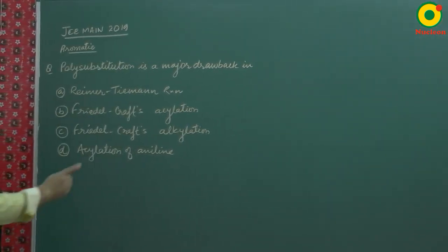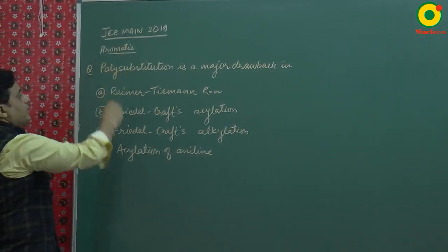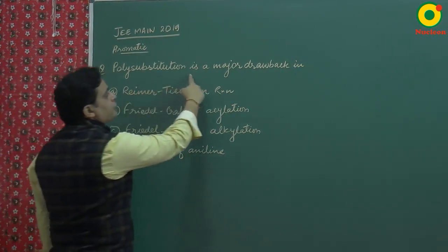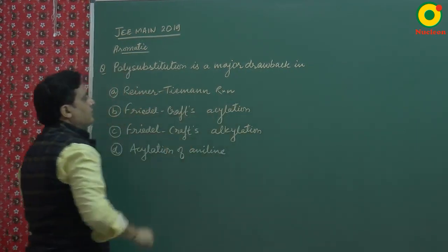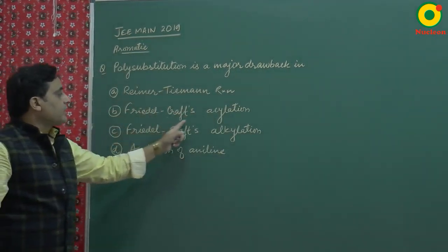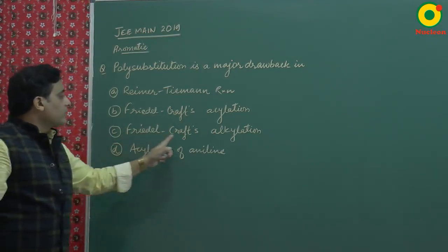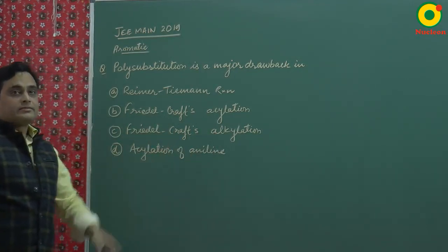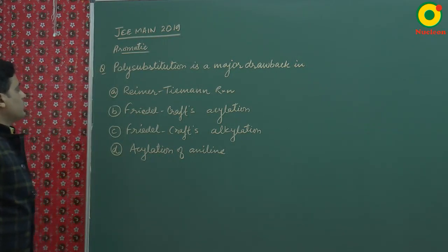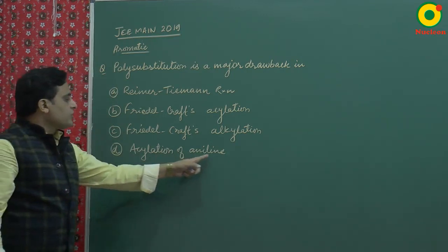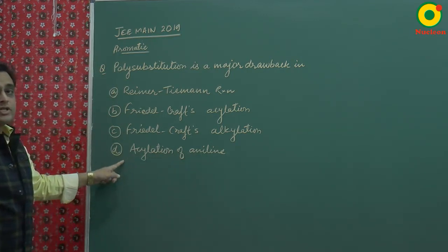JEE Main 2019 had a question on the aromatic chapter: polysubstitution is a major drawback in which of the four reactions? The reactions are Riemann-Tiemann reaction, Friedel-Crafts acylation, Friedel-Crafts alkylation, and acylation of aniline. I will tell you that acylation of aniline is not a substitution reaction.